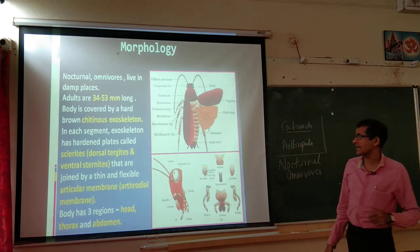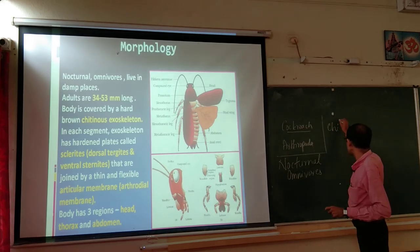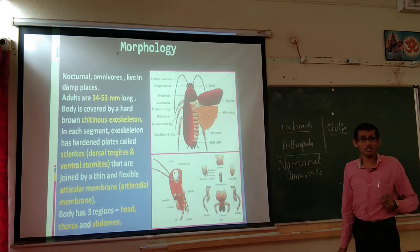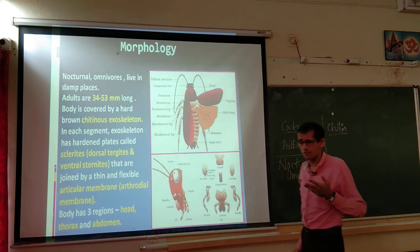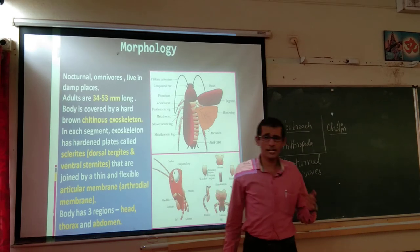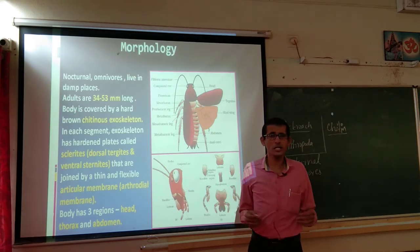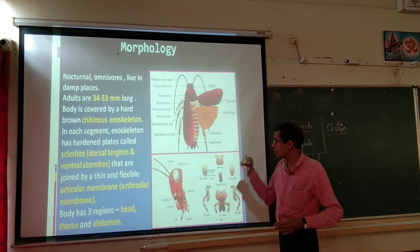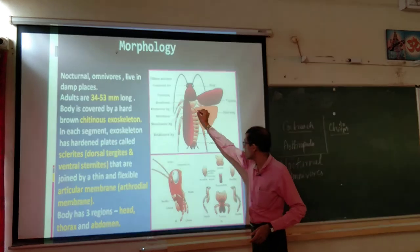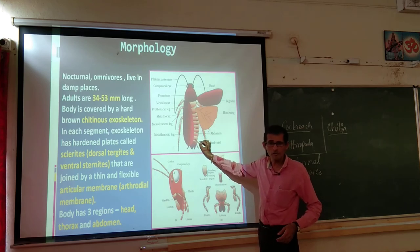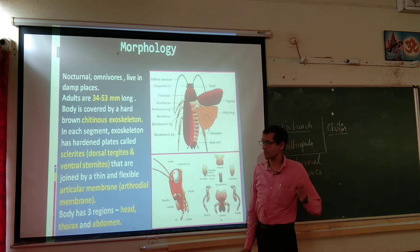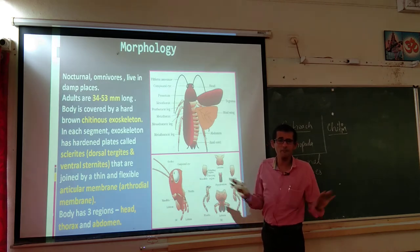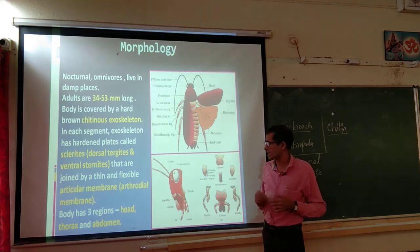The chitinous exoskeleton protects the internal organs. Endoskeleton (bones) is absent because cockroach is non-chordata. In each segment, the exoskeleton has hardened plate-like structures called sclerites. Sclerites are the hard exoskeleton plates observed on the body wall of the cockroach.